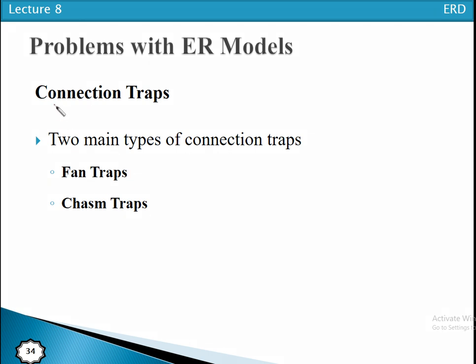Dear students, today we will discuss the problems with ER models. The main problem that exists with the ER model is the connection trap. A connection trap occurs due to the misinterpretation of the meaning of certain relationships — when a relationship exists among different entity types but its meaning is misinterpreted. We have two main types of connection trap: fan trap and chasm trap.